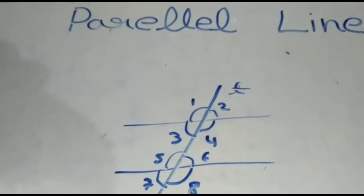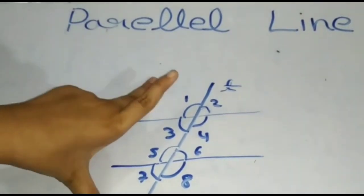Now we discuss interior angles: 3, 4, 5, and 6. Exterior angles are outside the parallel lines: 7, 8, 1, and 2.